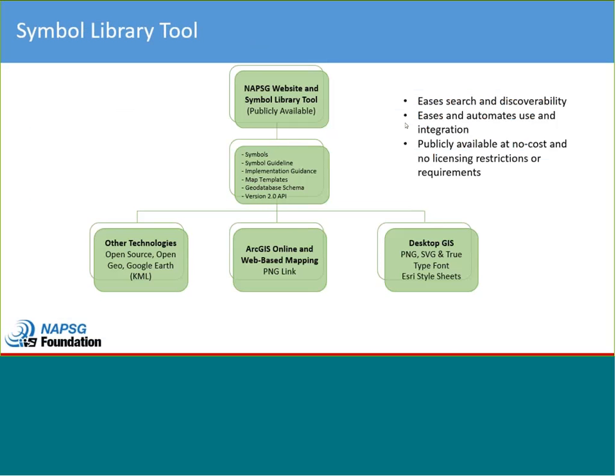The symbol library tool supports a variety of formats — from desktop GIS to online web mapping to Google Earth via KML using PNG styles. We have symbols, guidelines, implementation guidance, and map templates — all publicly available at no cost. It's easily searchable and discoverable. I'm always pleasantly surprised to see our work embedded in maps from various departments and agencies around the country, because that's exactly what it was intended for.